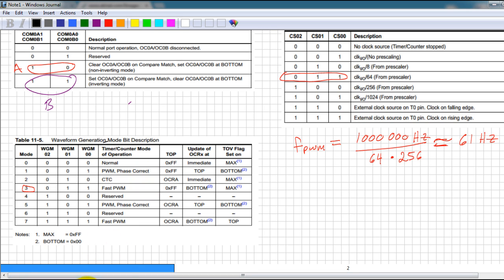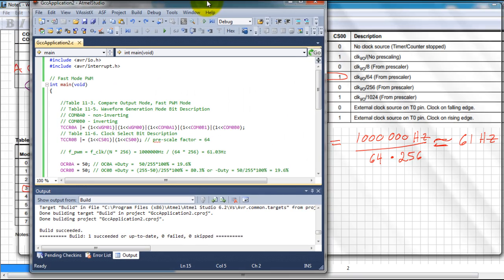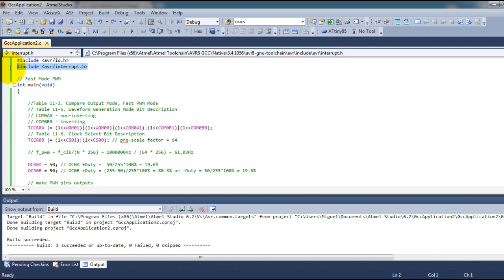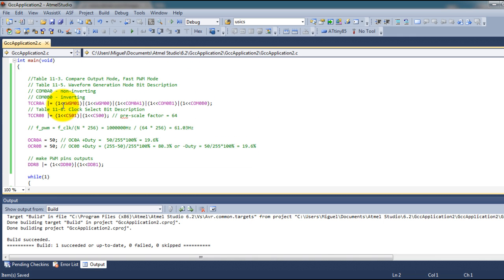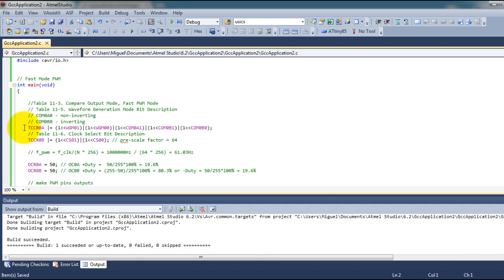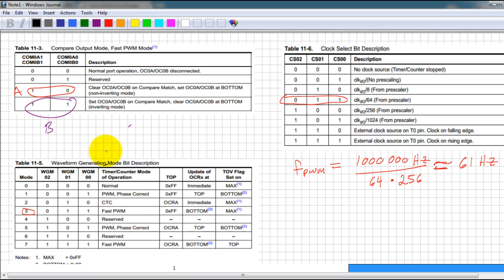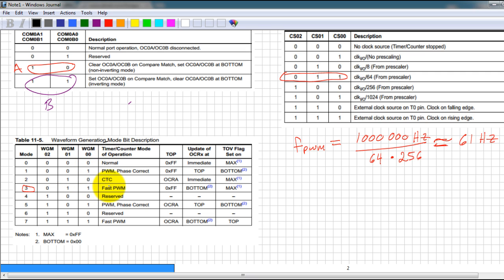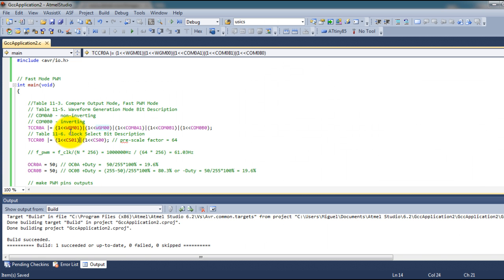So let's go ahead and check out the code. This is where I set my WGM bits. Like I said, I have selected fast PWM with my top of 0xFF. So I only have to set these two bits, and the bit that I do not have in here, which is WGM02, would be zero since I don't have it here.